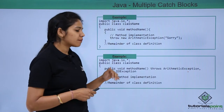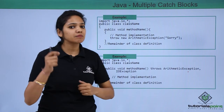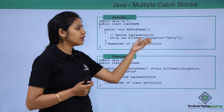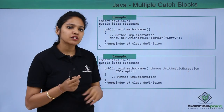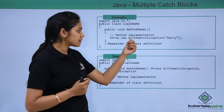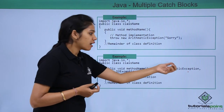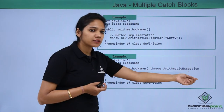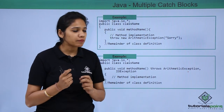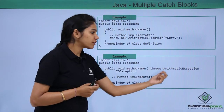Let us understand with an example what throw and throws do. In the first example, a class and method are created. Inside the method, you write: throw new ArithmeticException("message") — using the throw keyword followed by new and then the exception class with a message. In the case of throws, you declare it with the method signature: public void methodName() throws ArithmeticException, IOException. You do not use the throws keyword inside the method body. Also, with throw you can only throw one exception, whereas with throws you can declare multiple exceptions.